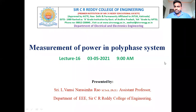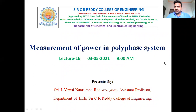Before going further, we are discussing the instrument — the wattmeter. The prime purpose of wattmeter is to measure power. We classify the wattmeter into two types: UPF (unity power factor) wattmeter and LPF (low power factor) wattmeter.